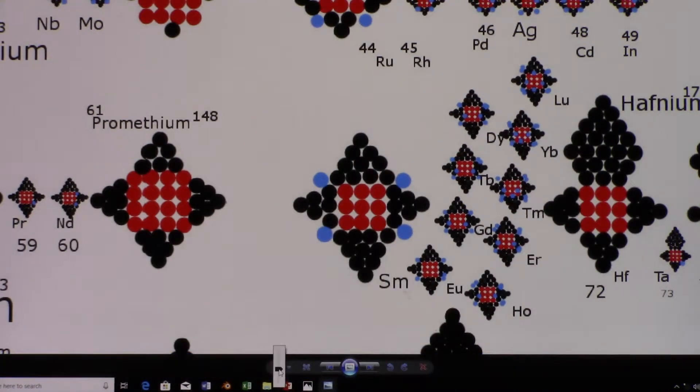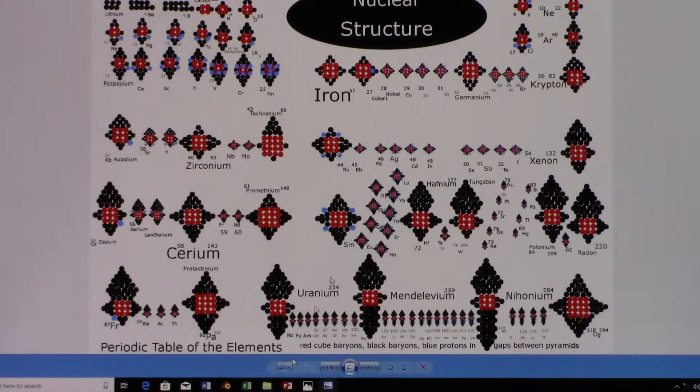In the entire periodic table, we see that there's mostly three layers of red in each element. At the center, the core of each element has a cube of 3×3×3: 27 protons and neutrons.